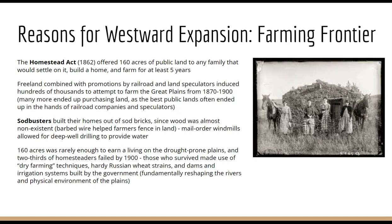This free land combined with railroad promotions and land speculators induced a lot of people to come and attempt to farm on the Great Plains between 1870 and 1900. Ironically, the promoters that often convinced people to come out were doing this specifically hoping that people would not be able to manage it — that they'd be driven out by drought, lack of money, or lack of resources — so that land speculators could then buy up that land really cheaply.